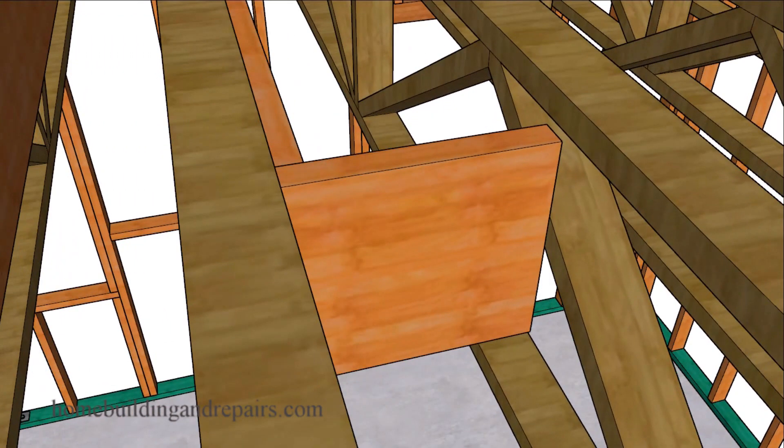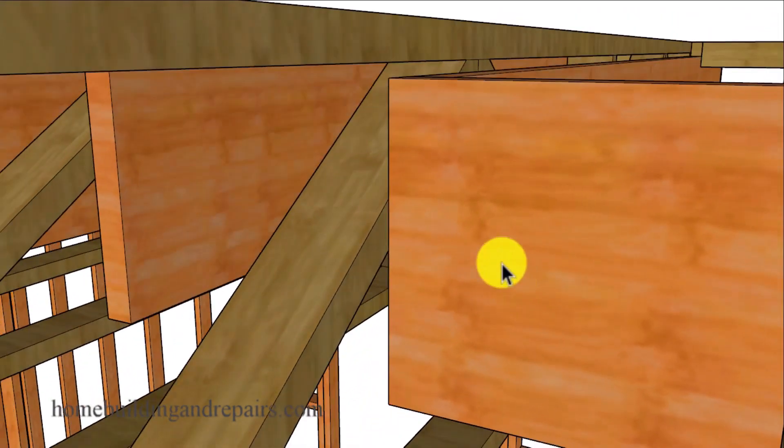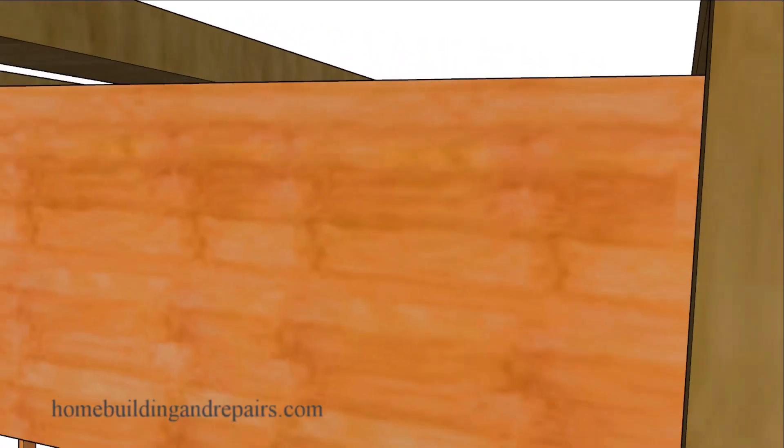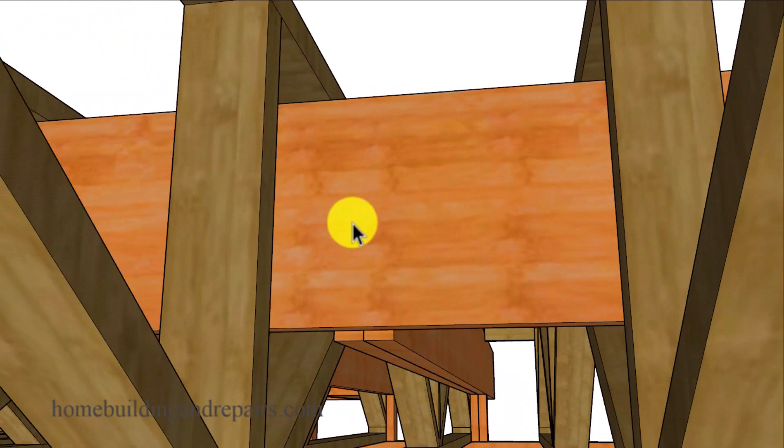Another thing you might consider doing would be to block the end of it. However, you can see here where we're not going to get much nailing on either side with a block like this. You might be able to extend the length of the joist for the cantilever to where it falls into a bay where you can use a solid piece of lumber like we have here and butt it up against the bottom of the top cords.